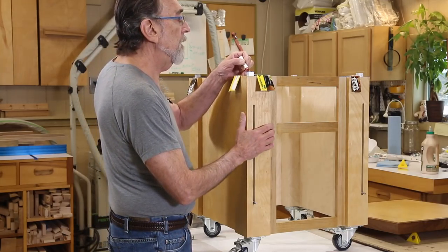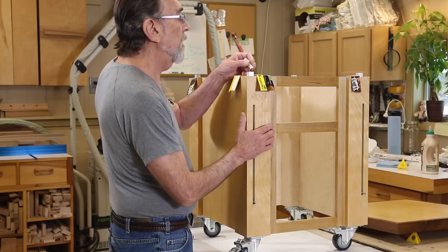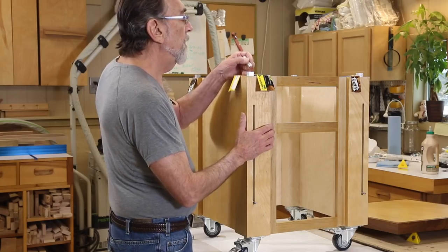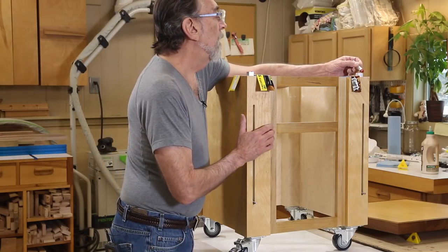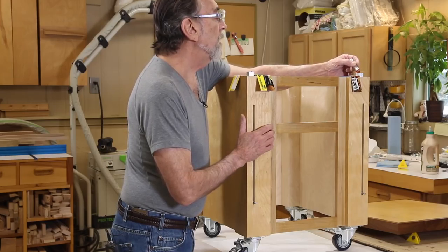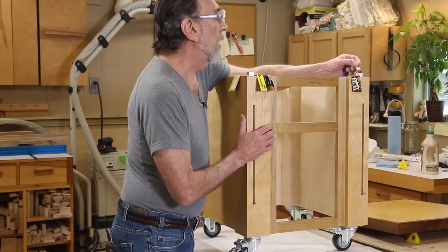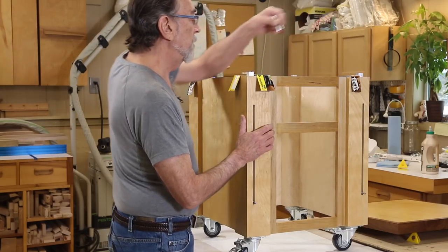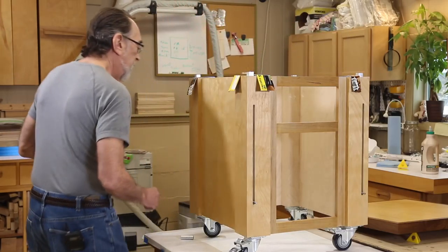But if we get enough of a mark there to show at least part of the location of this on all four corners, we'll be in pretty good shape. Then we can double check it by doing a little measurement with the tape measure. Let's see how this works.